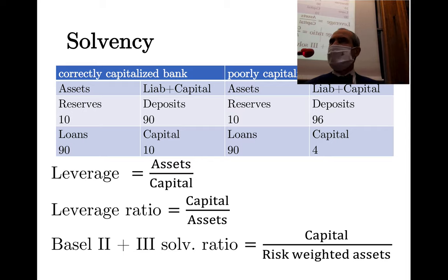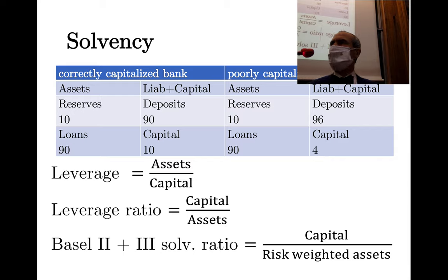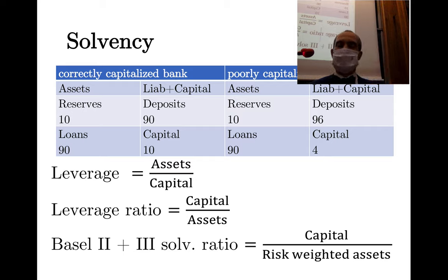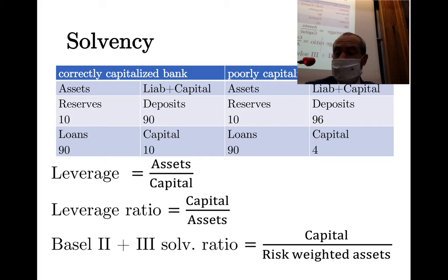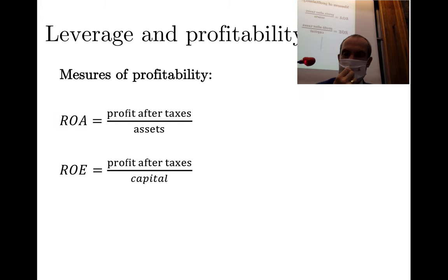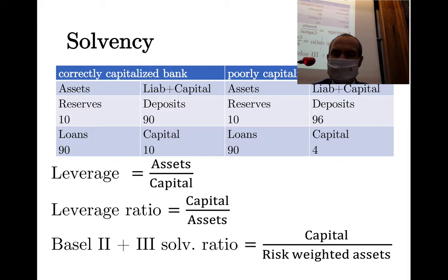Basel refers to agreements signed in the Swiss city of Basel, implemented not just in the EU and UK but also in the G20 countries — which are actually more than 20 countries. The Basel solvency ratio looks like a leverage ratio: capital divided by risk-weighted assets.